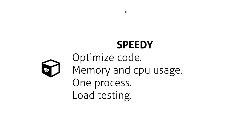Speedy: optimize your code — that makes sense. But also make sure that you monitor your memory and CPU usage. This is really important when you run things in production, because you need capacity to run your services. You want to know when you spin up a container for your service, how much memory and CPU does it use. If you know how much CPU and memory it uses, you can also specify that, which makes scheduling, upgrading your systems, and scaling up and down much easier. Also, one process per image is really important. And you can also incorporate load testing in your testing pipeline to see what happens when there's a lot of load on your service.